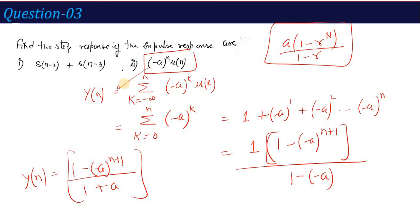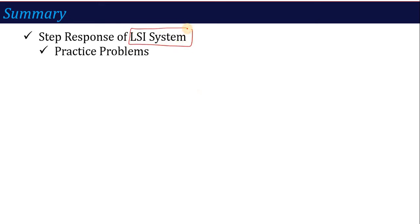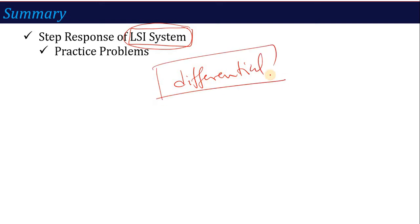So it's simple: step response means putting u[n] as input for discrete systems or u(t) for continuous systems, and then calculating the output of the system. I hope after doing these questions, you can explain all properties of the LSI system — causality, stability, and step response. An important part remaining is representation of the LSI system using difference or differential equations, which I will start in the next lecture. Stay tuned, see you in the next lecture. Thank you.